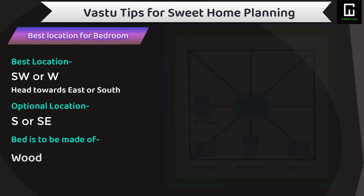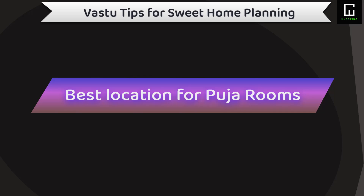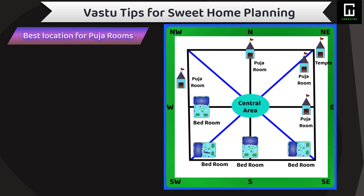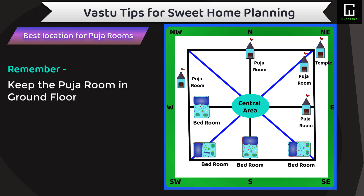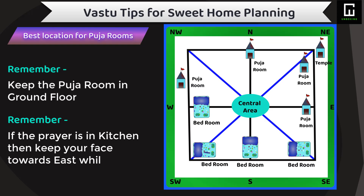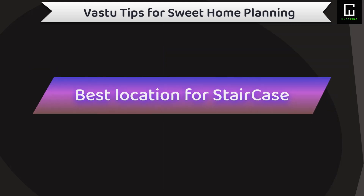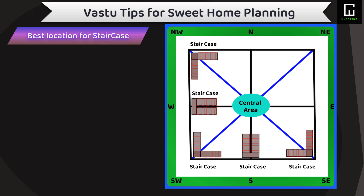As per Vastu, the northeast corner of a house is the best site for a puja room or temple for worship. East and west are the second best locations. Keep the puja place on the ground floor if possible. But remember, if the prayer area is in the kitchen, then keep it in the northeast corner of the kitchen, and your face should be towards the east while praying.